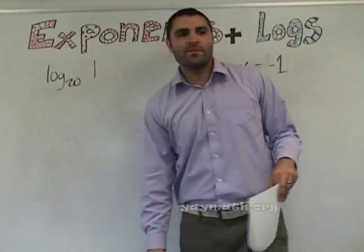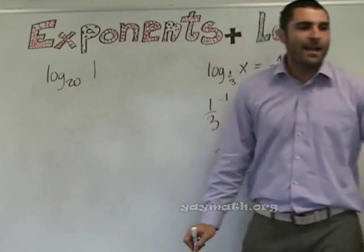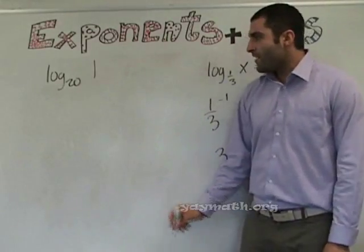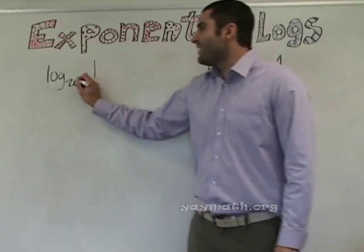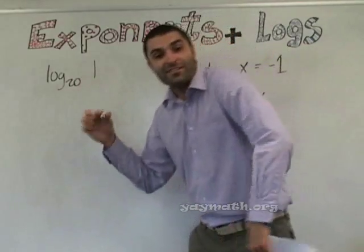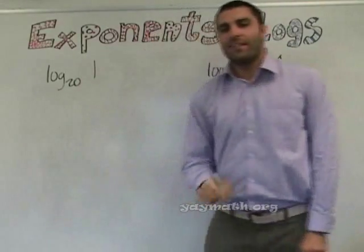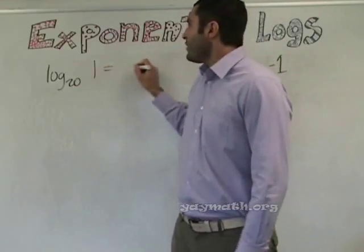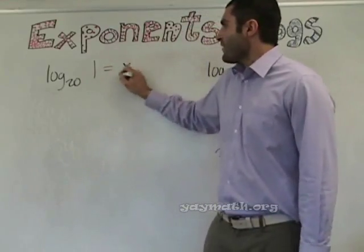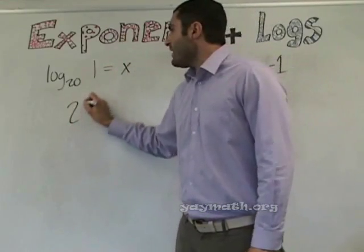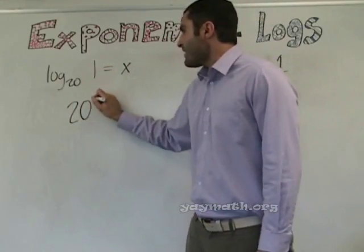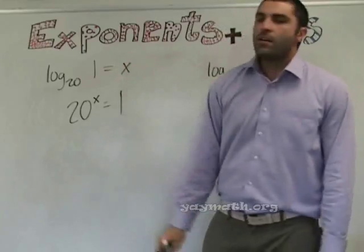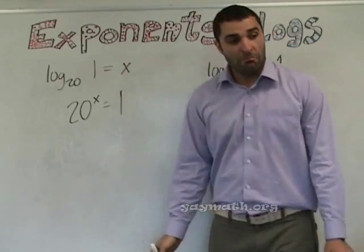This one trips some students up sometimes. Log base 20 of one equals X. As an exponent: twenty to the X equals one. X equals zero, since anything to the zero power is one.